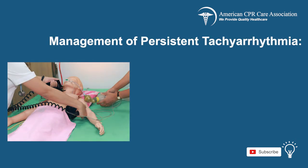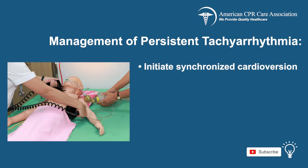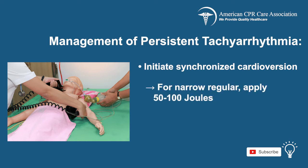For management of the patient, if persistent tachyarrhythmia has been diagnosed, you need to initiate synchronized cardioversion in the following doses depending on the diagnosis classification. For narrow regular, apply 50 to 100 joules.